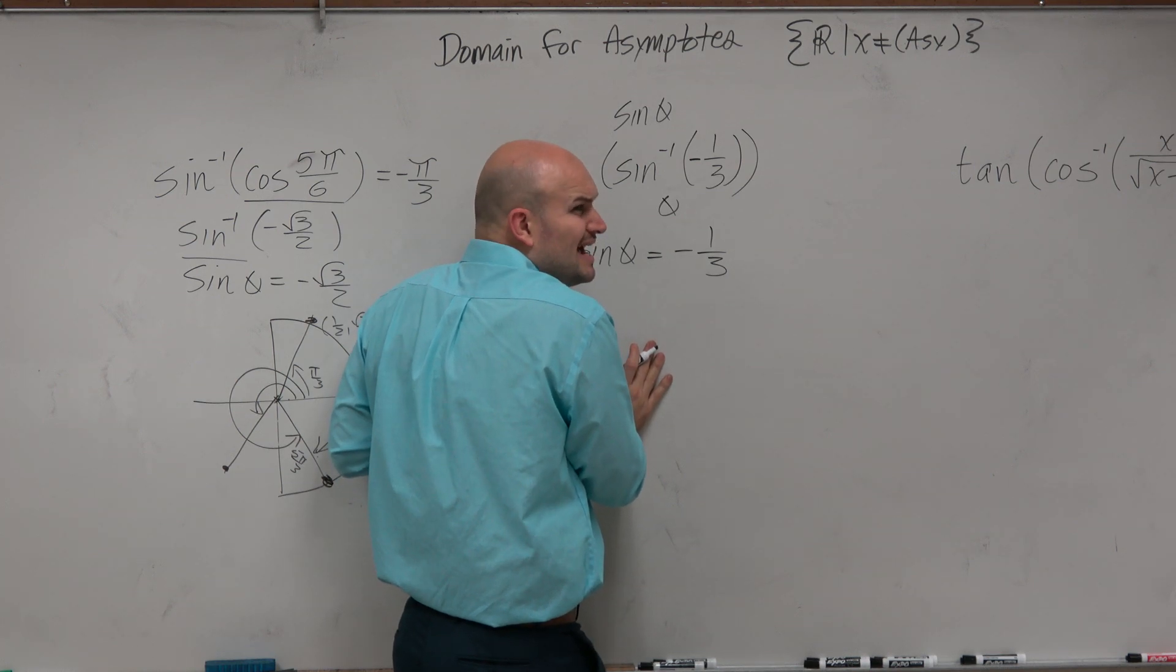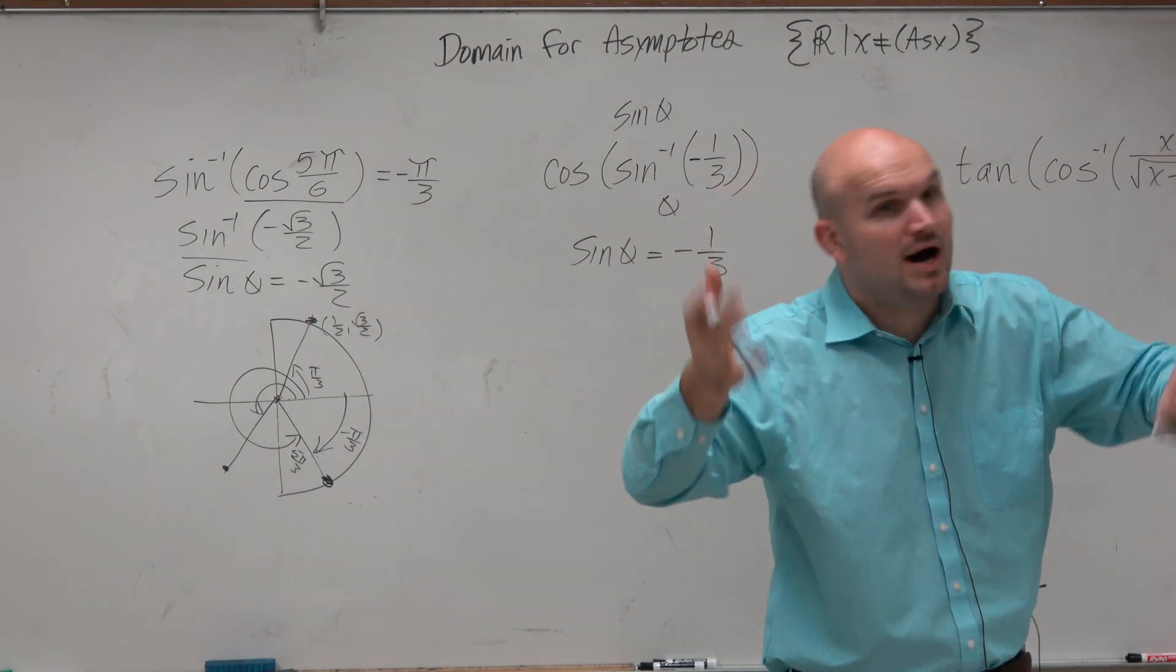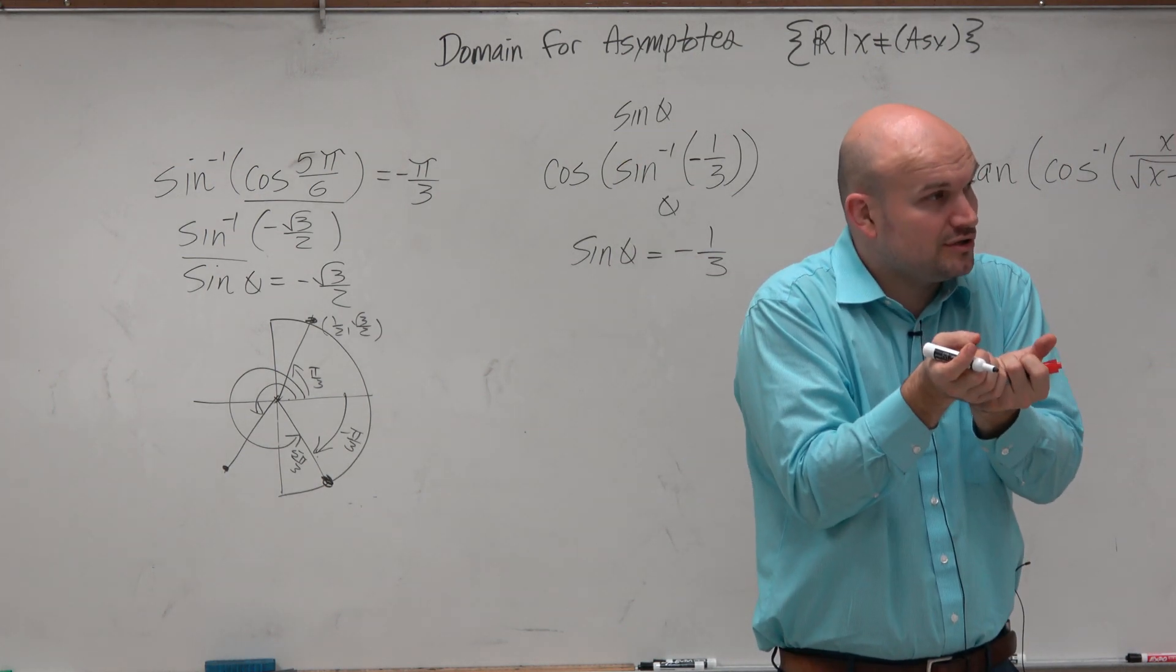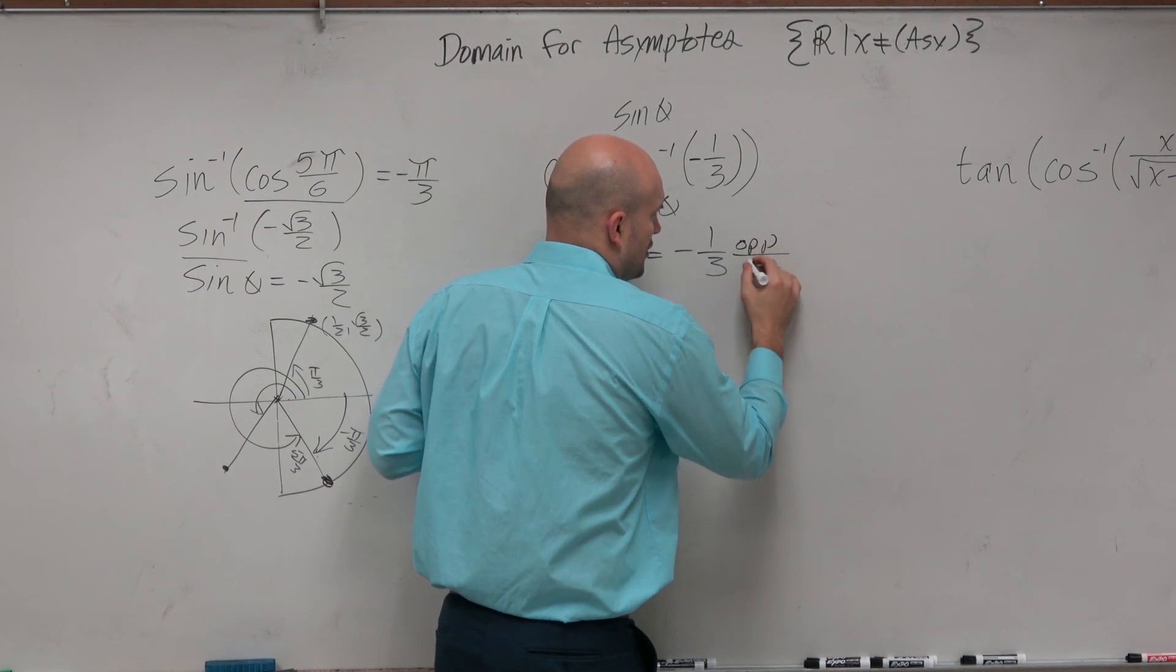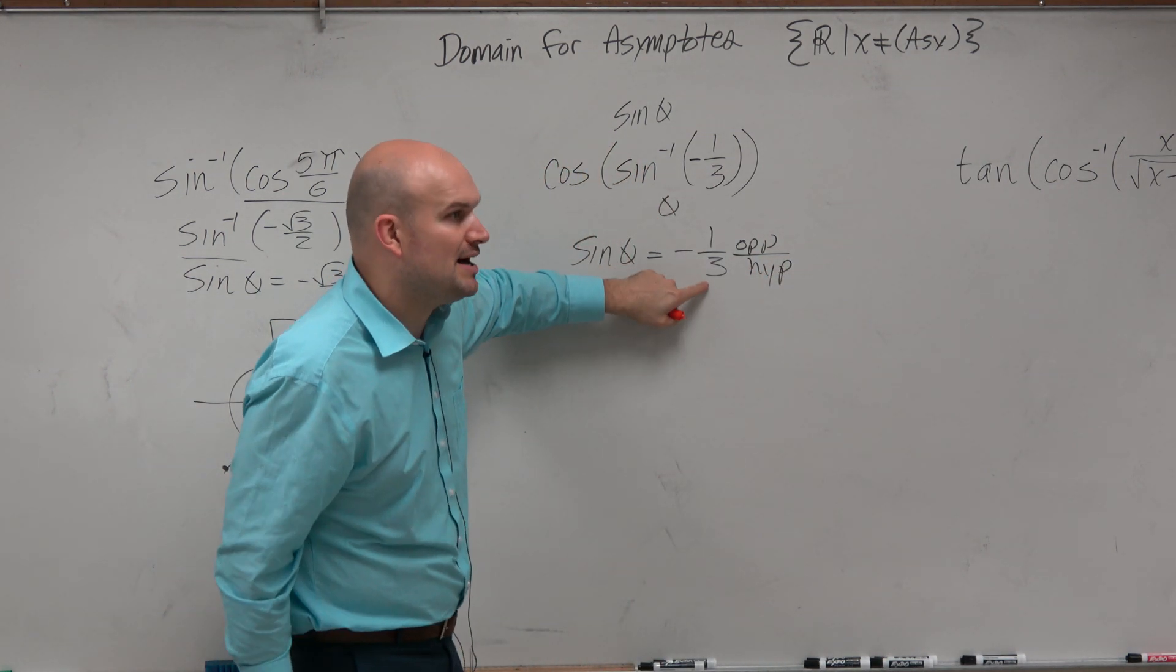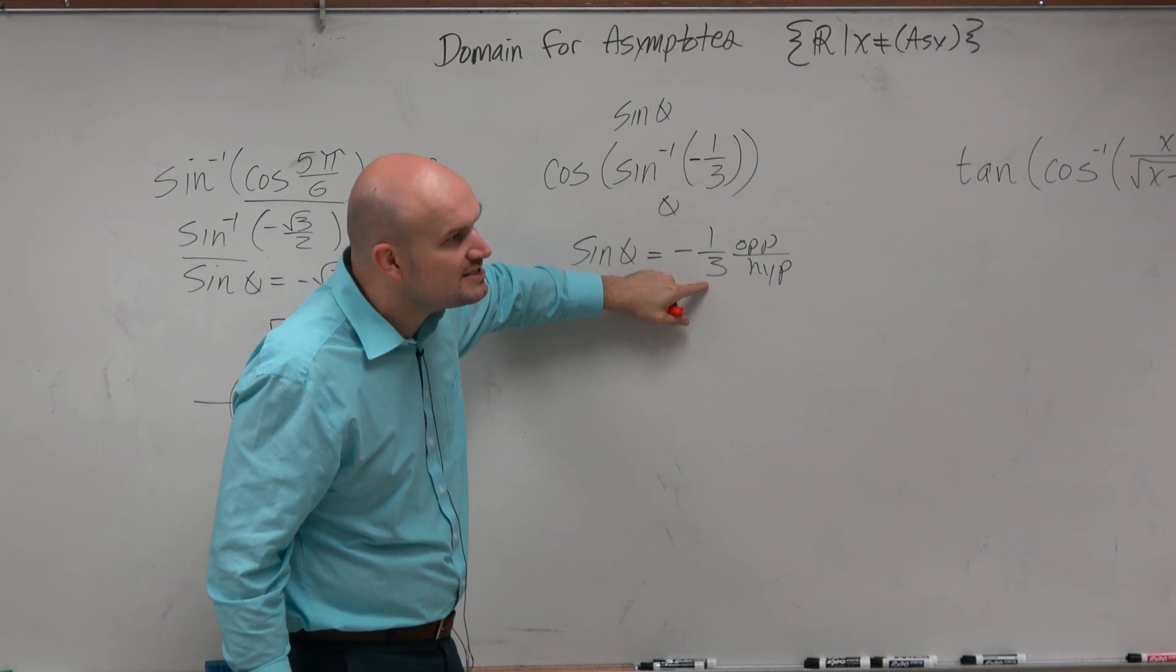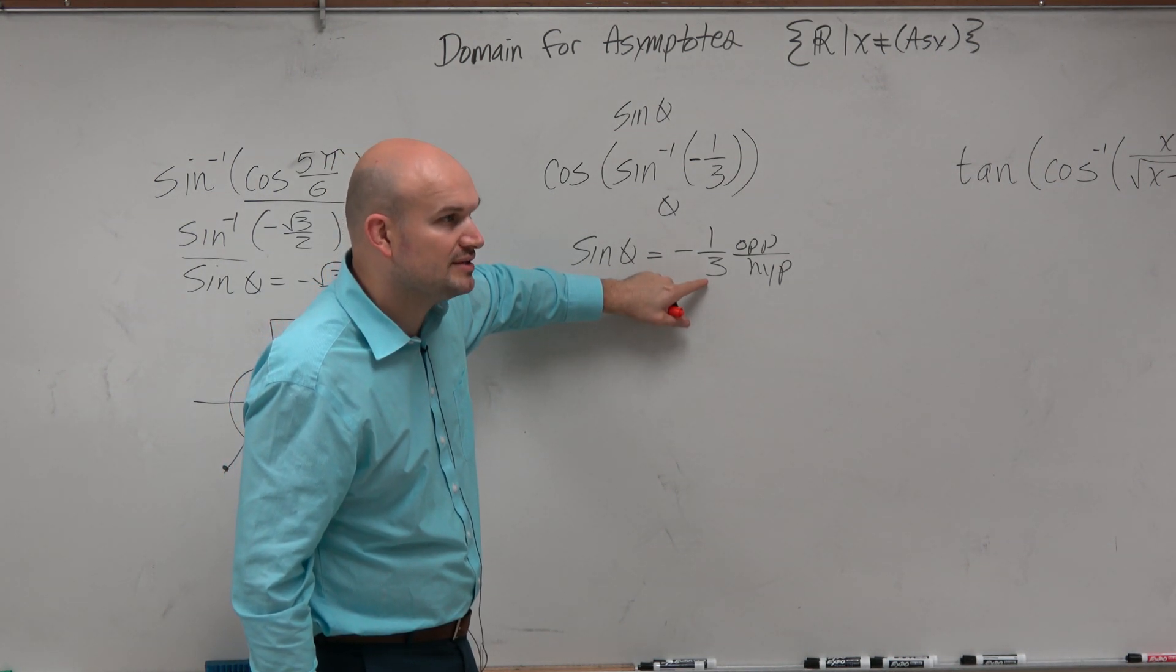Now remember what sine even represents. Everybody's so focused on the y-coordinate, the x-coordinate, from unit circle stuff. But don't forget the basics: opposite over hypotenuse. Obviously, if the hypotenuse is 3, we can see that this is not on the unit circle. Or at least this is not going to be evaluated on the unit circle.